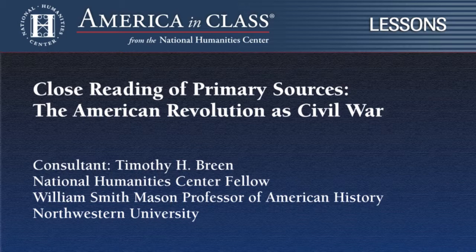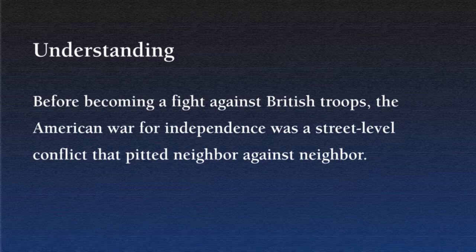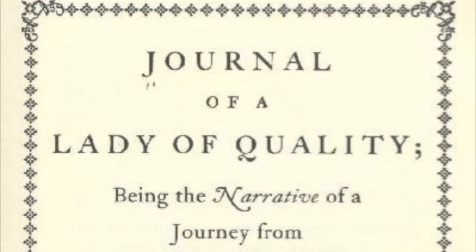This video previews an America in Class lesson that will allow you and your students to explore an aspect of the American Revolution that often gets overlooked: the extent to which the Revolution was a civil war. The lesson suggests ways to do a close reading of a primary document that, under the categories of the Common Core Standards, qualifies as an informational text. The lesson is designed to show students that before becoming a fight against British troops, the American War for Independence was a street-level conflict that pitted neighbor against neighbor. You'll find all the material presented in this video at The American Revolution as Civil War in America in Class Lessons from the National Humanities Center.